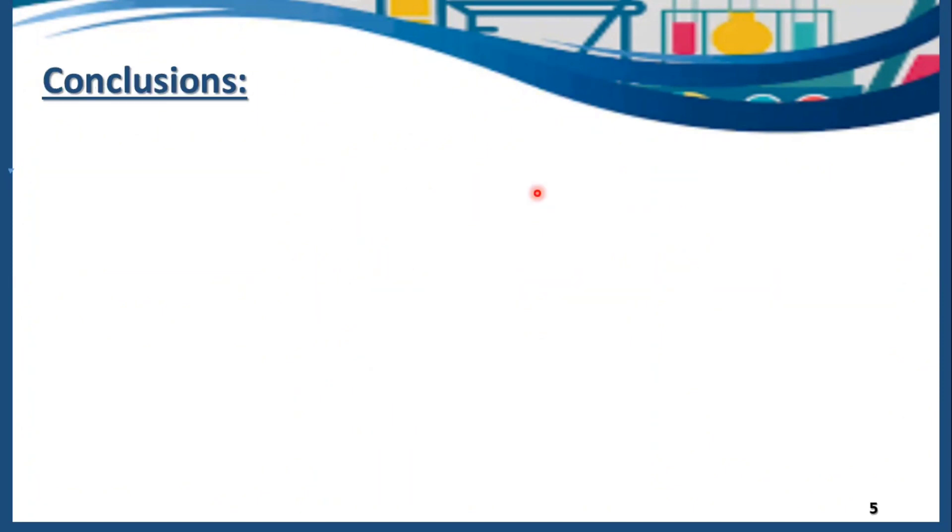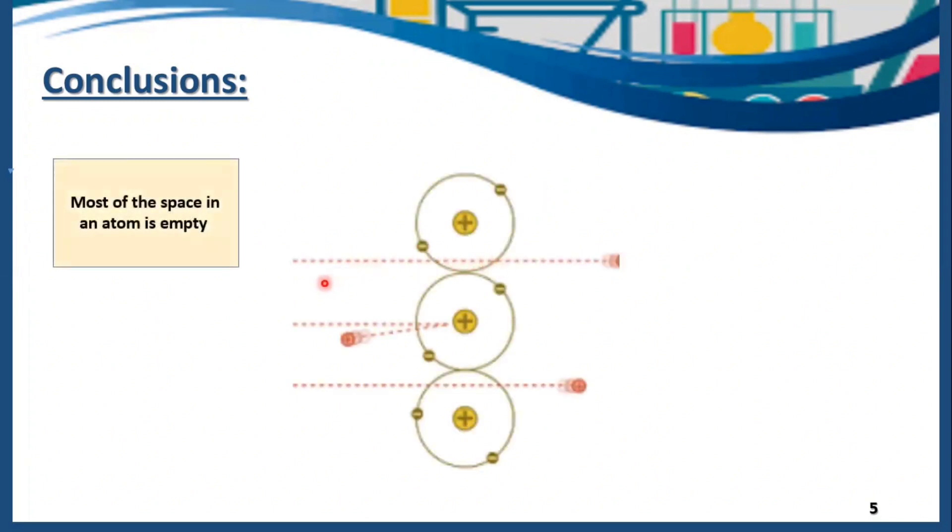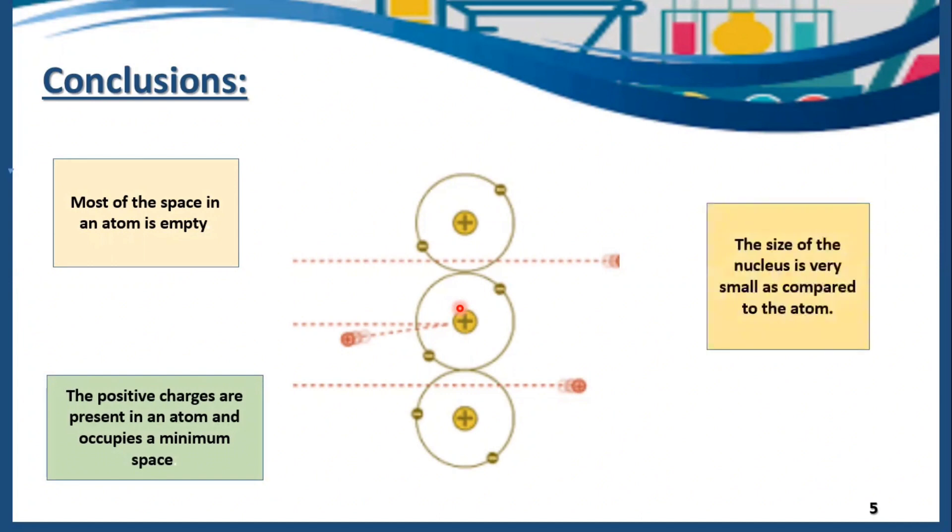What are the conclusions made by Rutherford? Rutherford said most of the space in an atom is empty because about 19,990 alpha particles passed straight without any deflection. The positive charges present in the atom occupy a minimum space because they are present in the center in the nucleus. That is why we see deflection at a smaller angle in just 8 alpha particles. The size of the nucleus is very small as compared to the size of the whole atom.